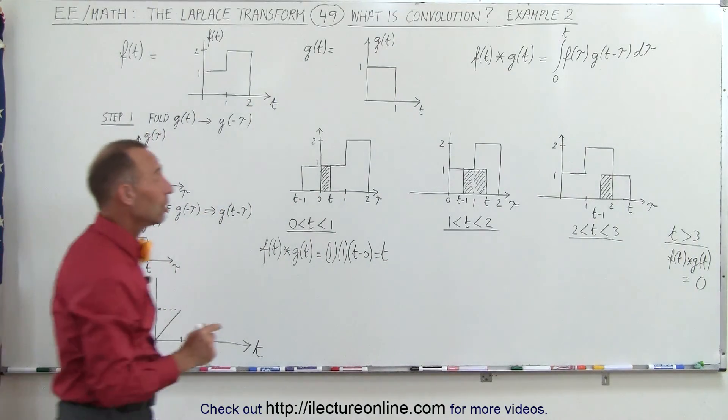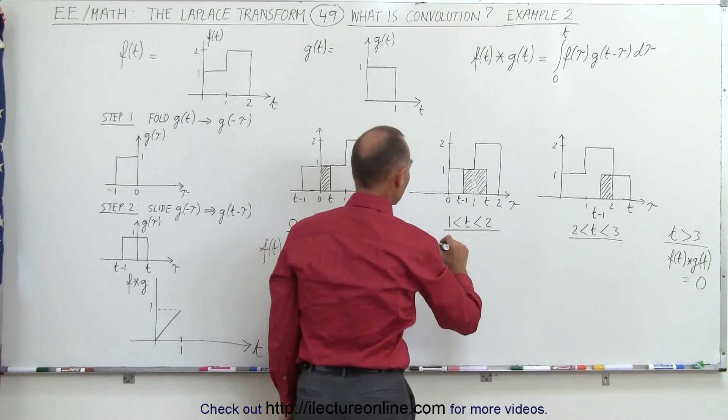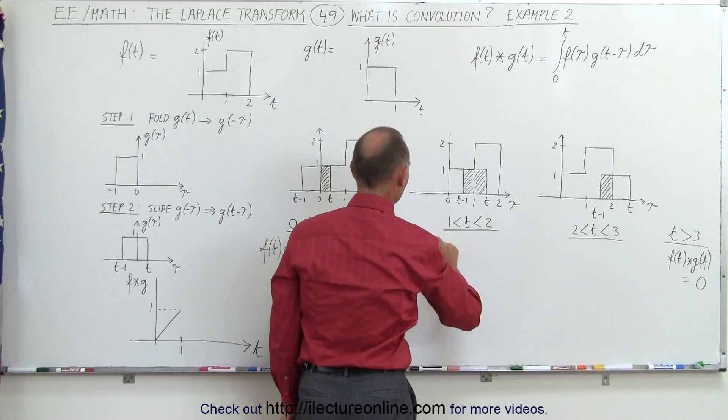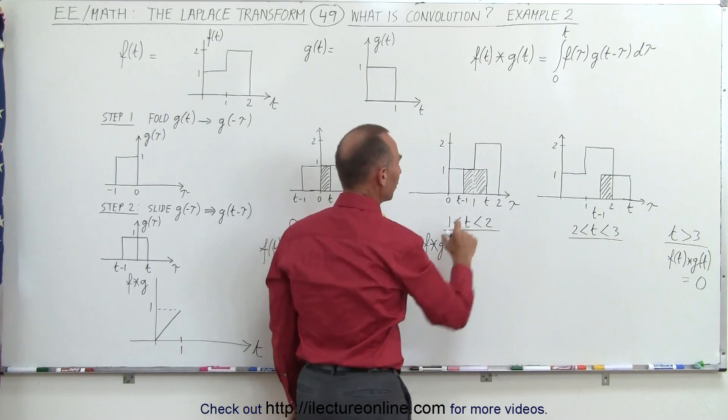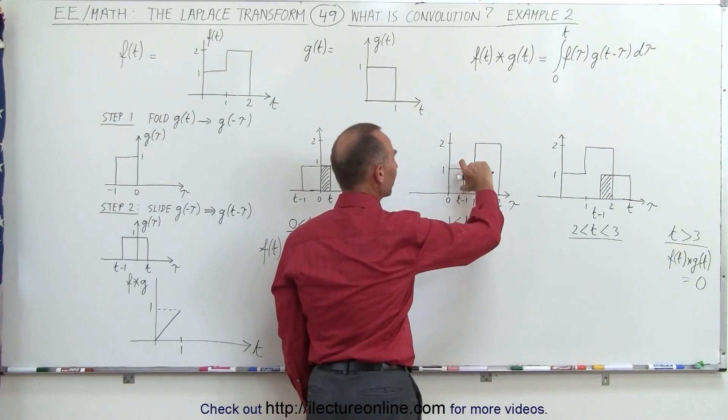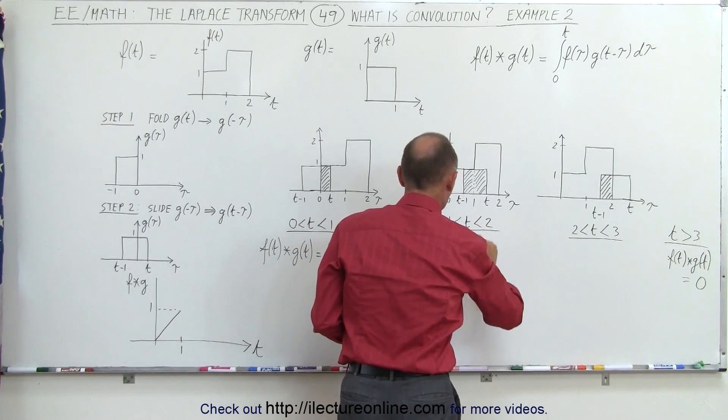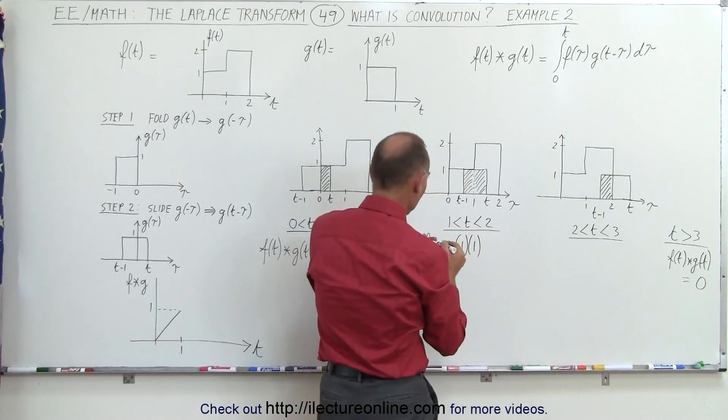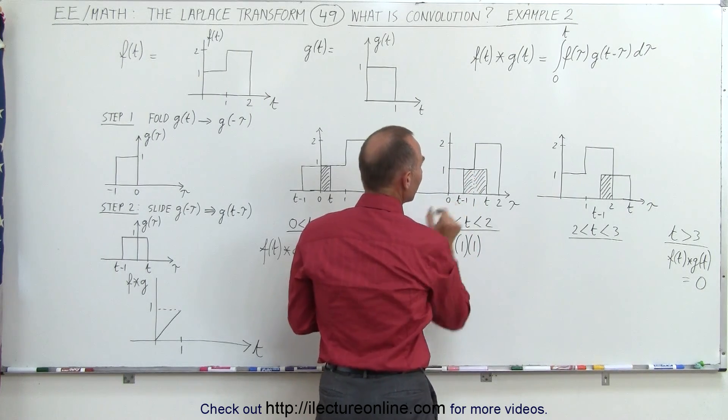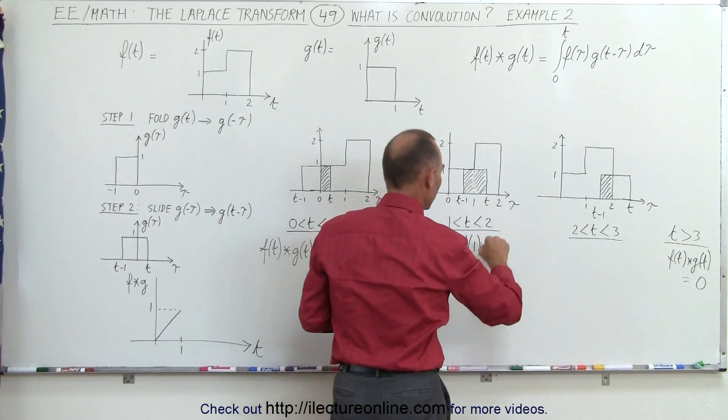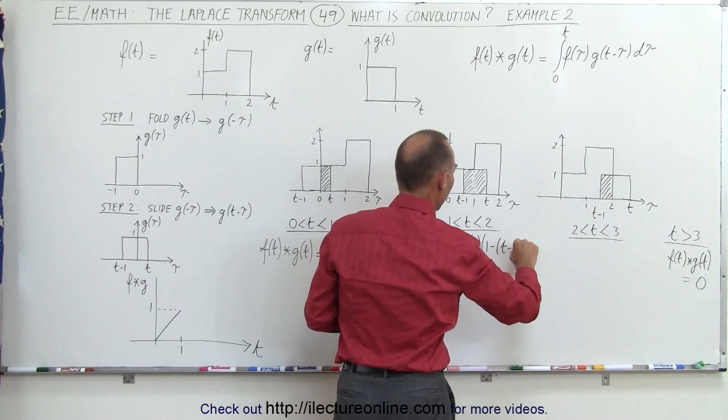Now we're going to do it for the second region, but notice there's going to be two different types of overlap. So in this region, from 1 to 2, we can say that f convolved with g is going to be equal, we'll take the first region, it's going to be the height of the one function times the height of the second function. In this case again, the height of both is equal to 1, so this could be 1 times 1, times the overlap, which is going to be 1 minus t minus 1. So the overlap is going to be the difference of those two, which is 1 minus the quantity t minus 1.